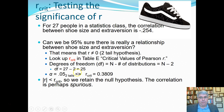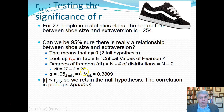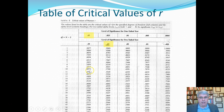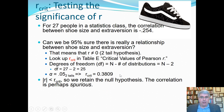The degrees of freedom equals 27 minus 2, which equals 25. We're making a two-tailed hypothesis because we have no theoretical reason the correlation should go in one direction. With degrees of freedom equals 25 and alpha equals 0.05, two tails, we go to the table. The row for df equals 25, alpha 0.05 two-tailed, gives us the critical value of 0.3809. That means the absolute value of the correlation must be higher than 0.3809 to be significant.